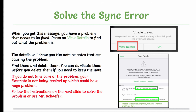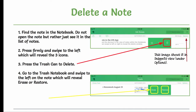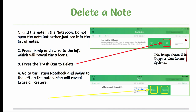Follow the instructions on the next slide to solve the problem or come see me, Mr. Schaefer. To delete a note, you find the note. Do not open the note — just see it in the list of notes. Press firmly and swipe to the left, which will reveal three icons. Press the trash can to delete. Then go to the trash notebook and swipe to the left on the note, which will reveal Erase or Restore. You should erase. Anything in your trash is also trying to be synced.